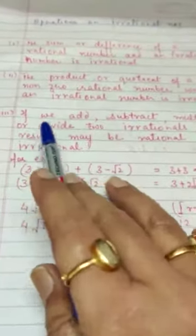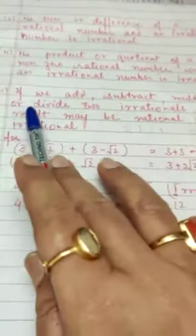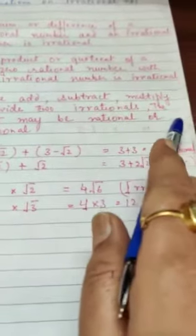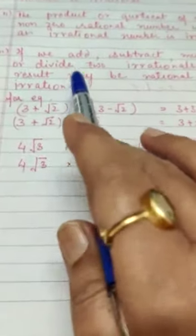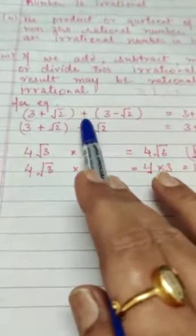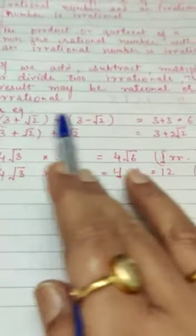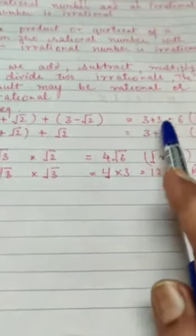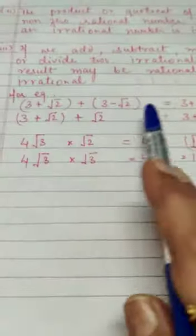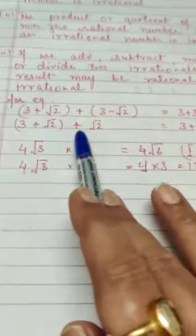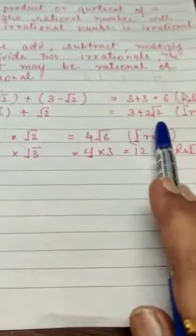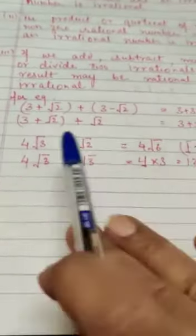Third point: if we add, subtract, multiply, or divide two irrational numbers, we may get a rational number or an irrational number. For example, (3 plus root 2) plus (3 minus root 2) equals - root 2 cancels with root 2, so 3 plus 3, that is 6, which is a rational number. (3 plus root 2) plus root 2 is 3 plus 2 root 2, that is an irrational number.